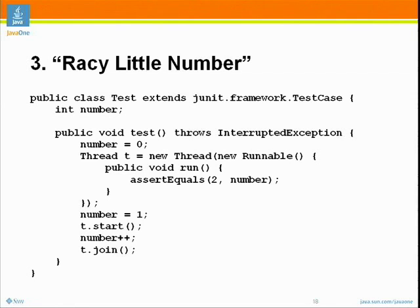We're basically going to create a test case in which we create a thread that will check that a number is equal to two. We set the number, start the thread, increment it, then join. We have a single test method. We set number to zero, create a new thread whose run method asserts that the number is equal to two. The question is, will the thread see number as two or some other value? If it is two, the test passes; if it's some other value, it fails.